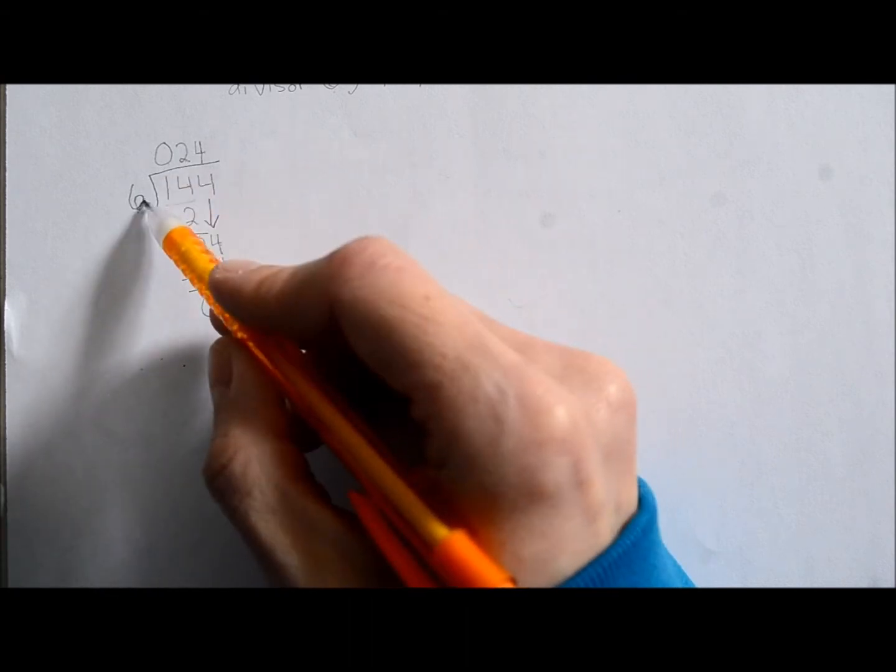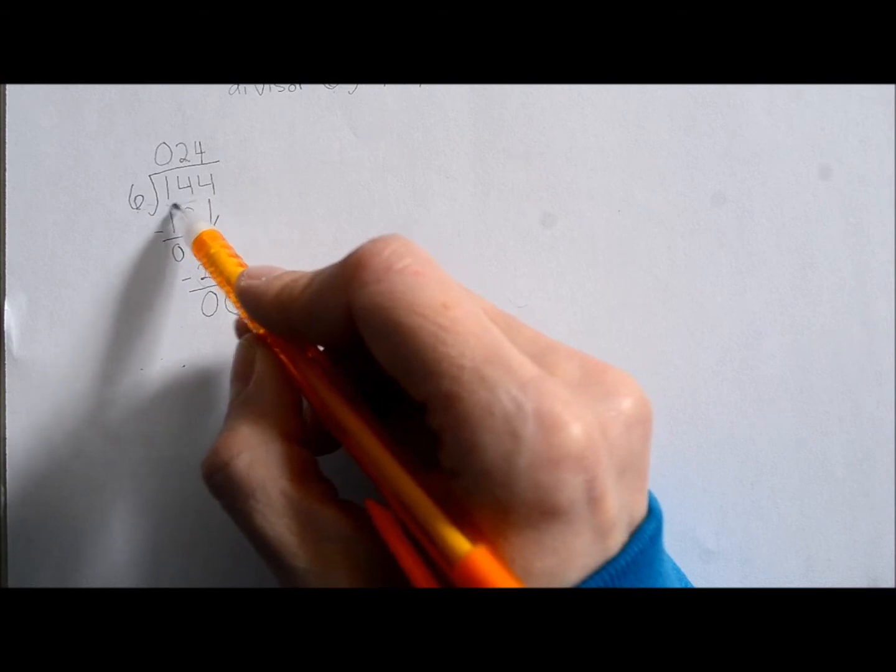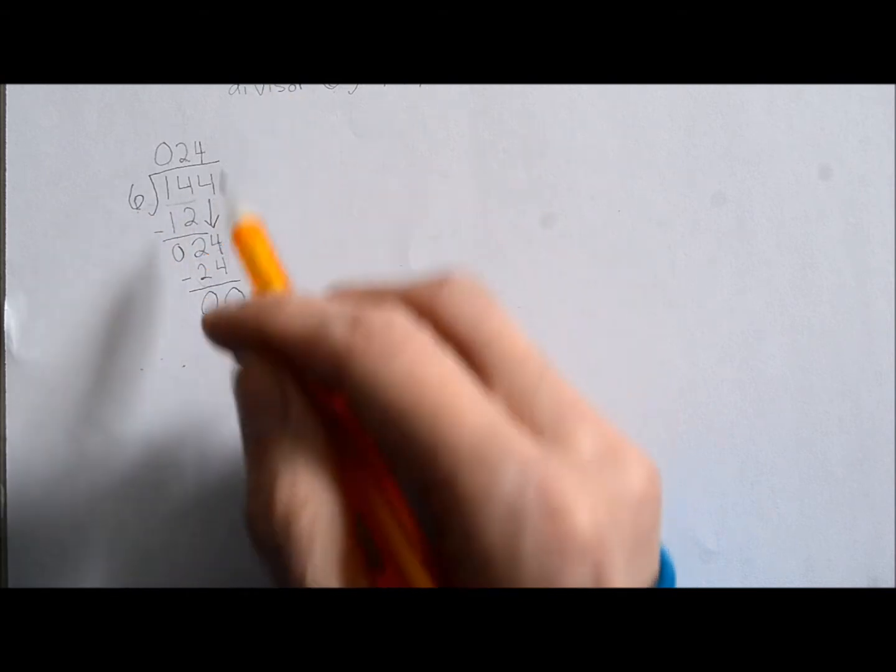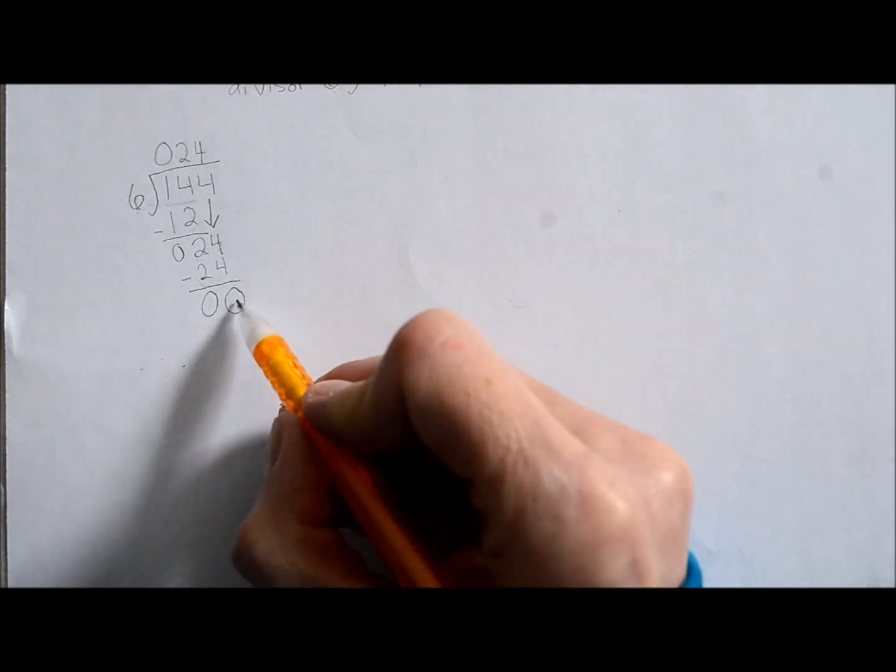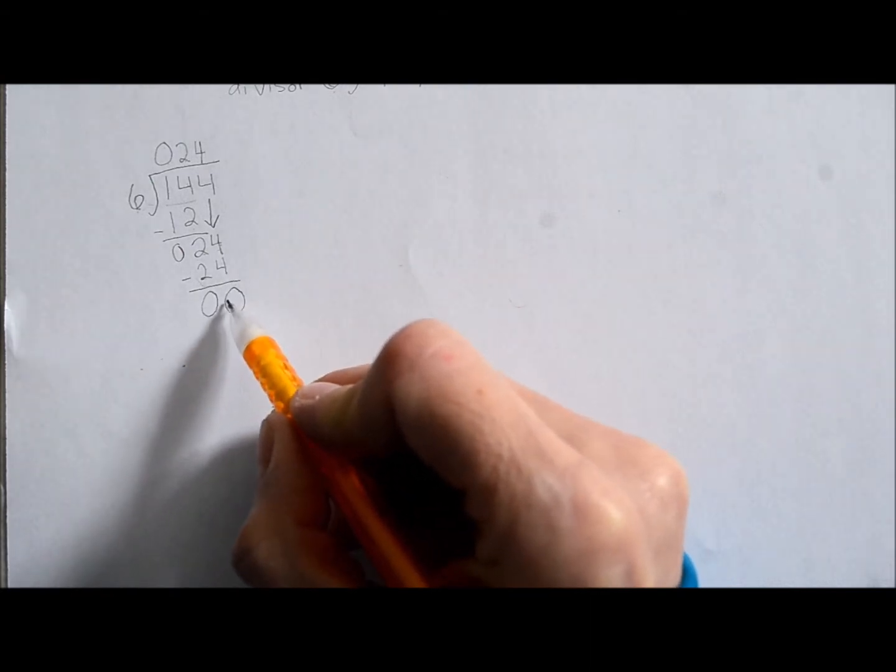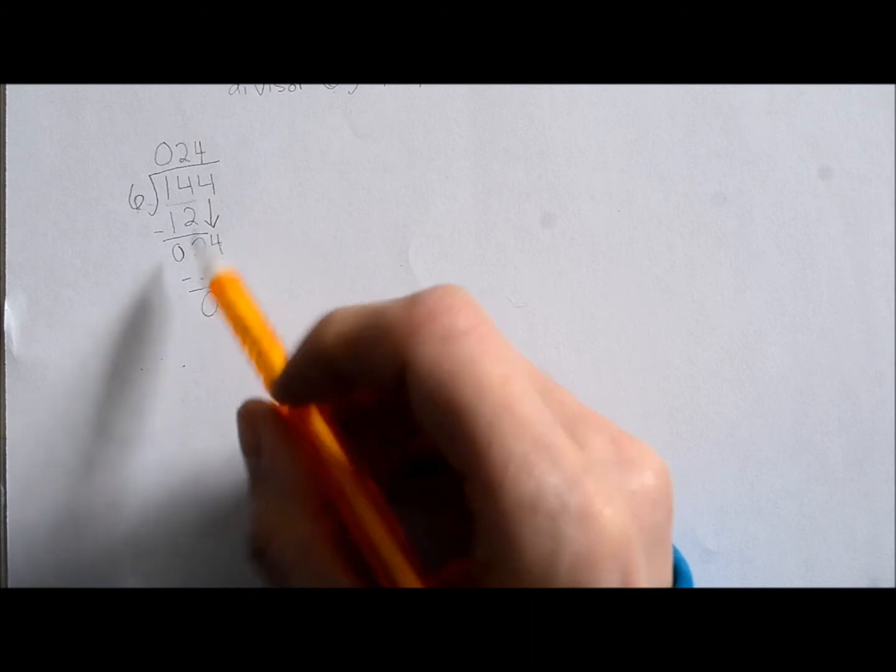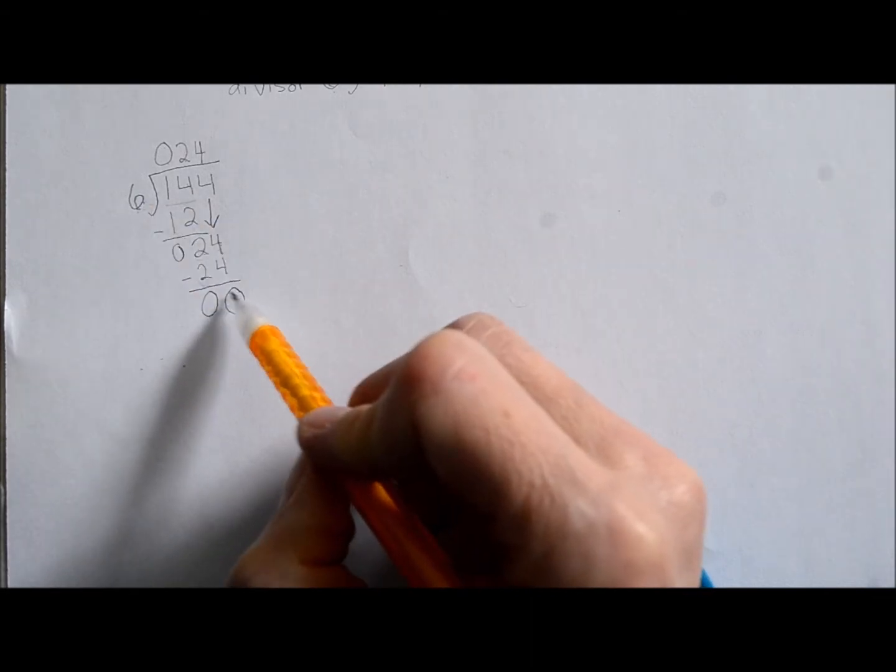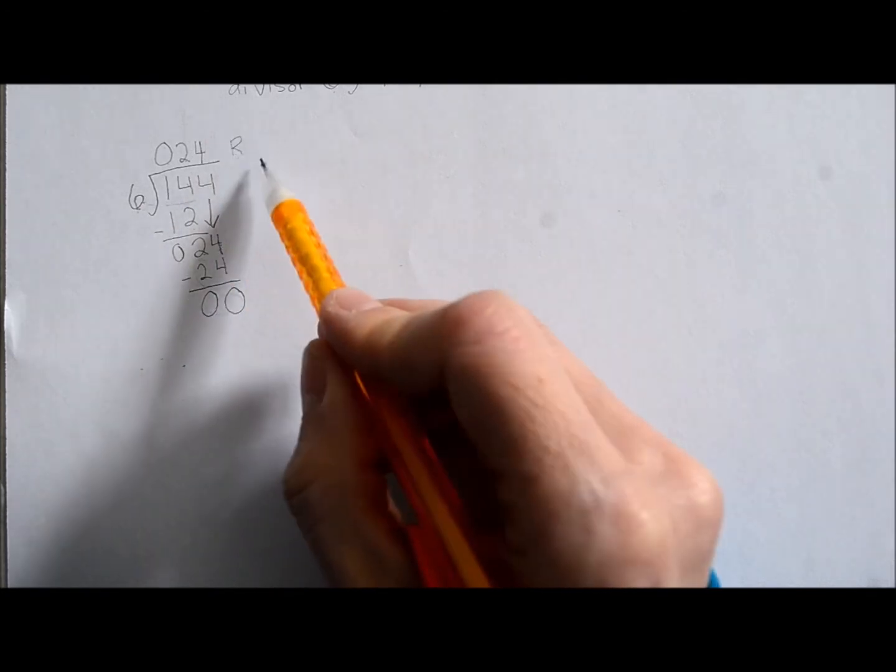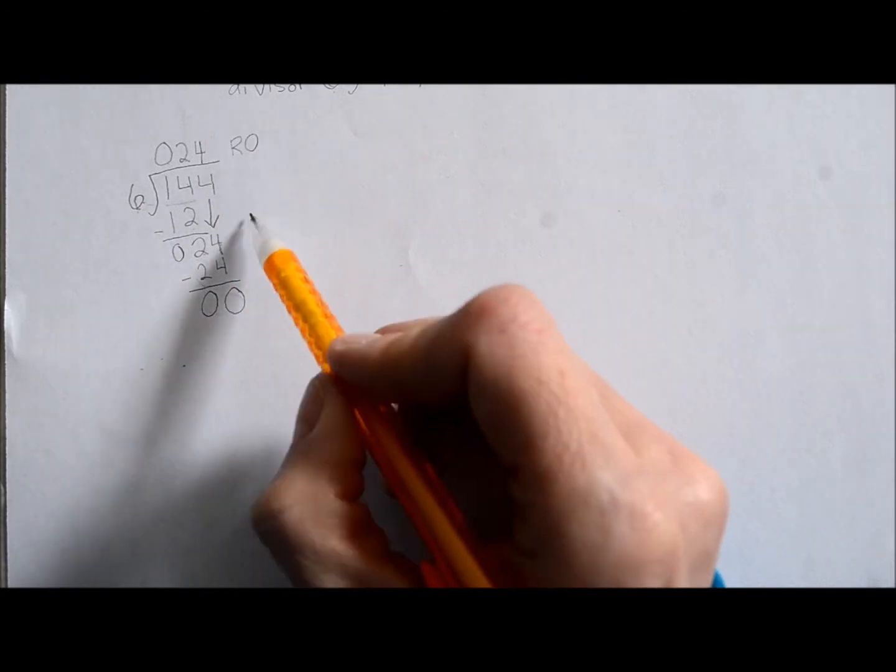It's gone into the dividend equally. All right. So there's no remainders. We're done this question. If there was a number down here and it was smaller than this number, so it can't go into it any more times, then whatever number is left over here is your remainder.